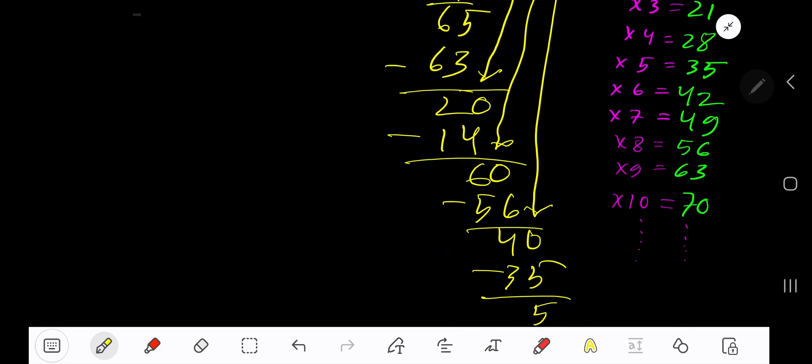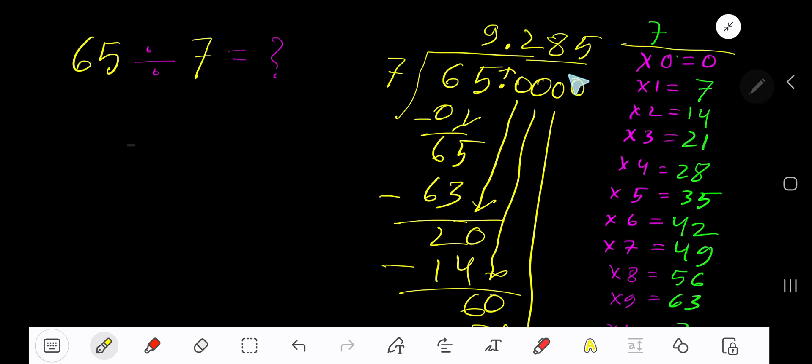You can bring down more zeros, but since we have gotten three places after the decimal, just stop here. The answer is 9.285 repeating.